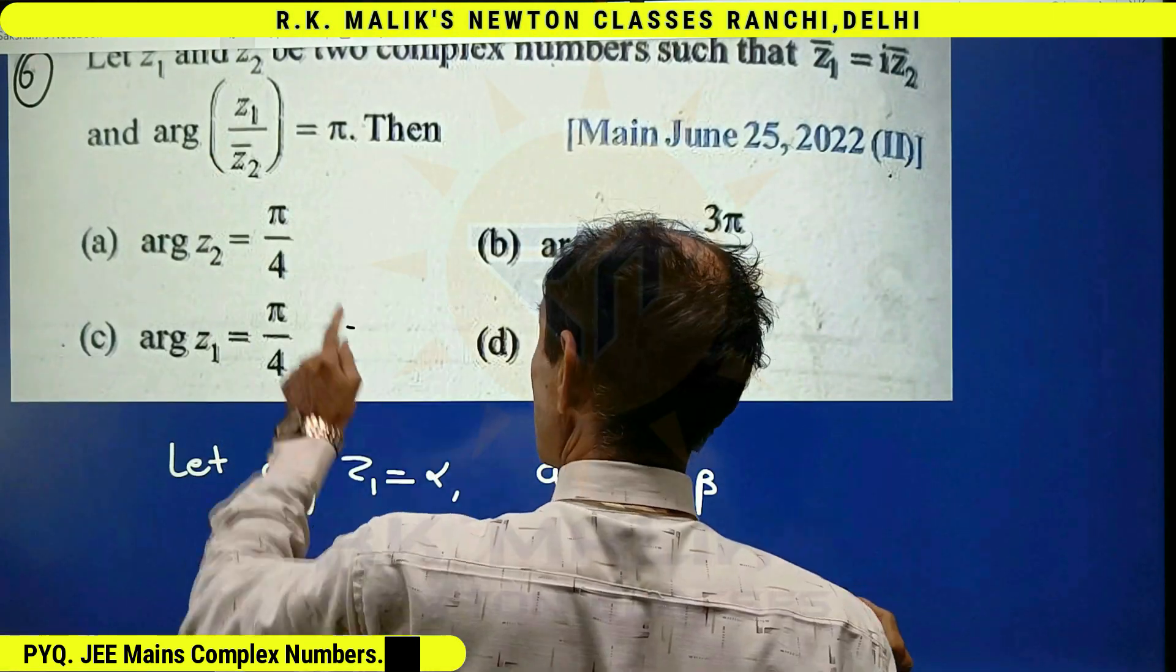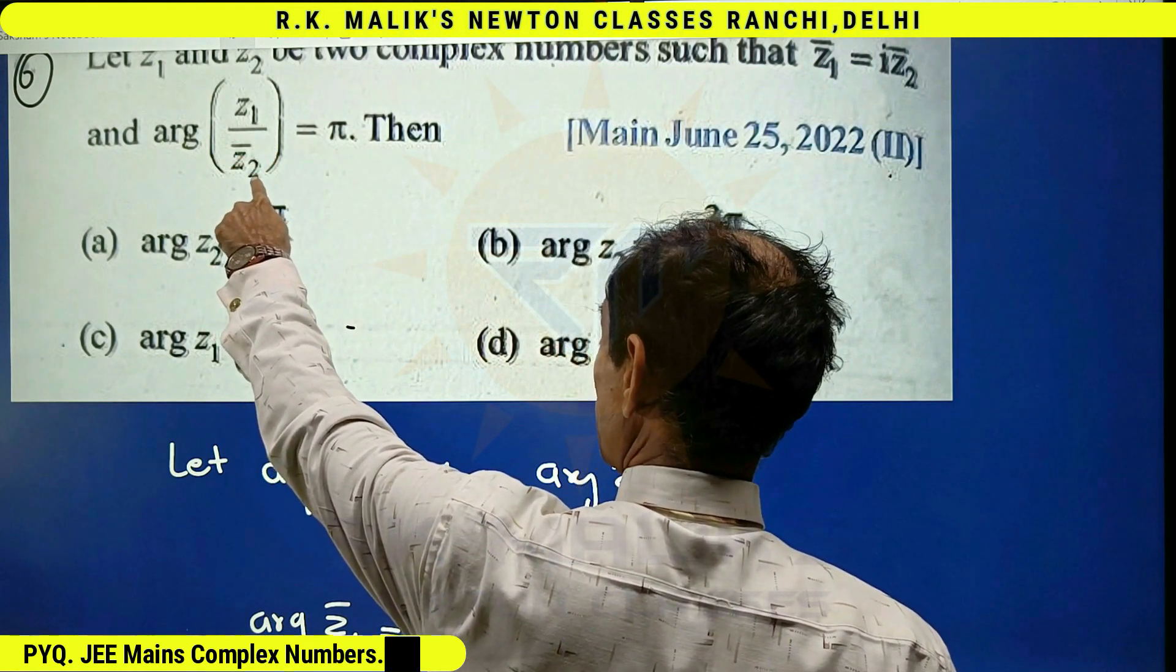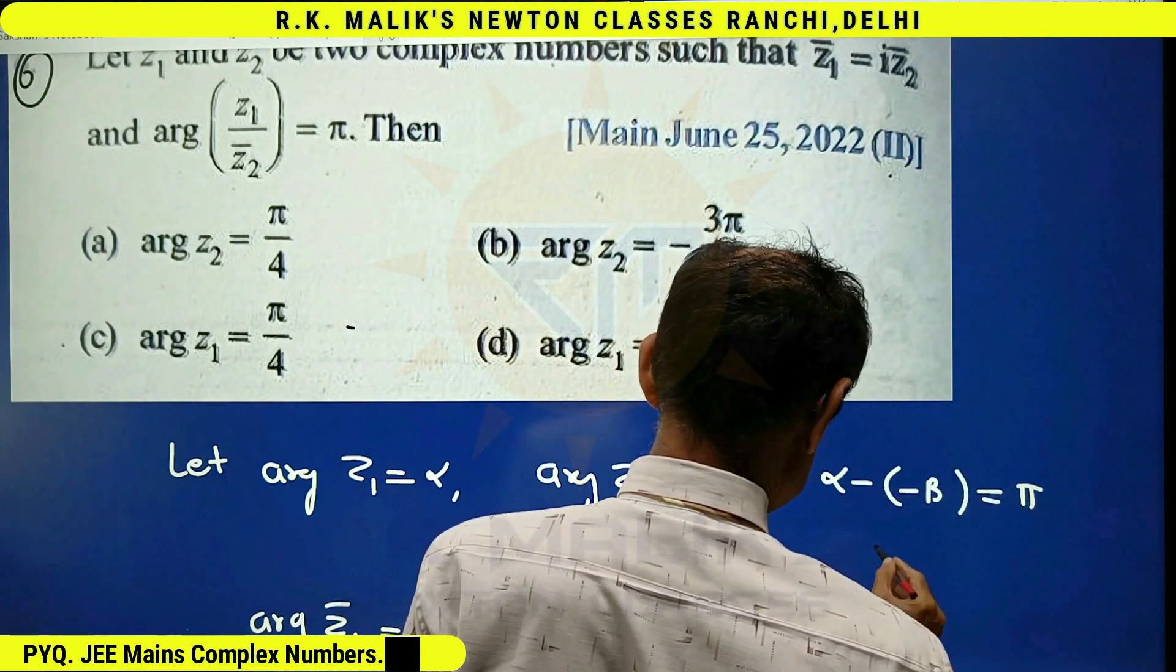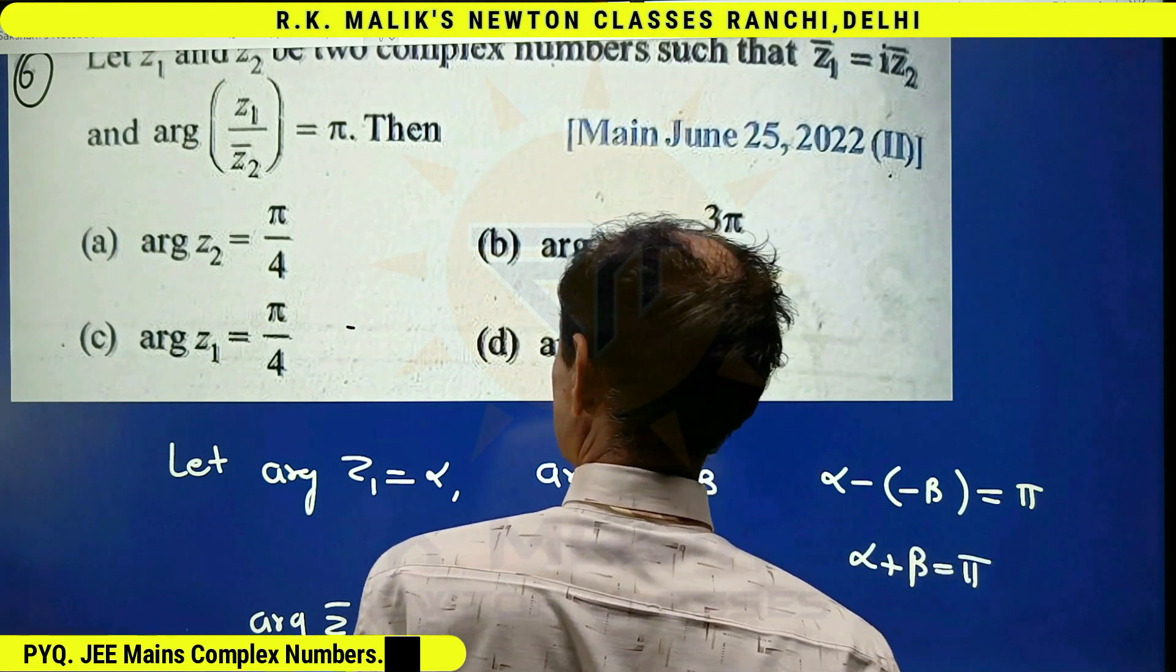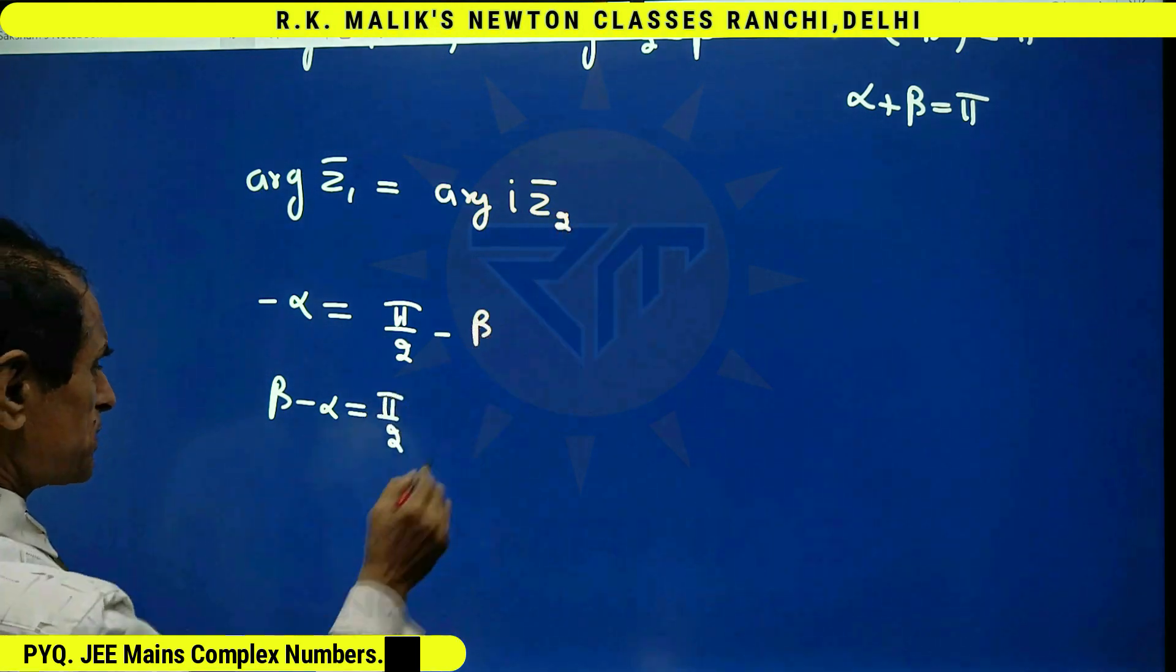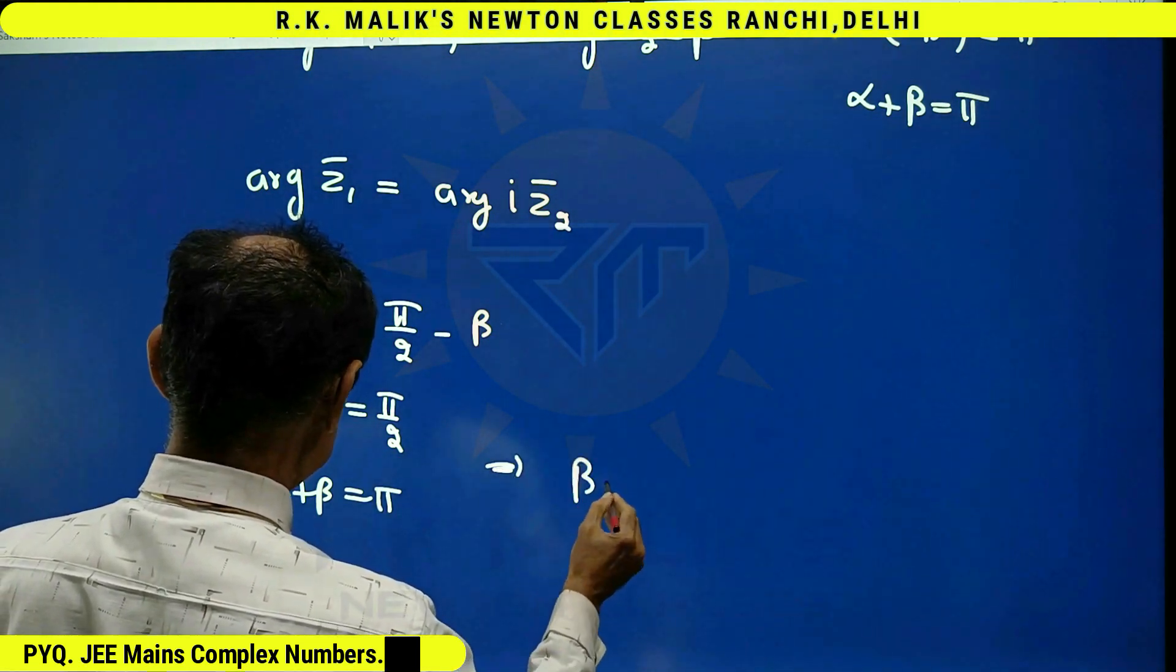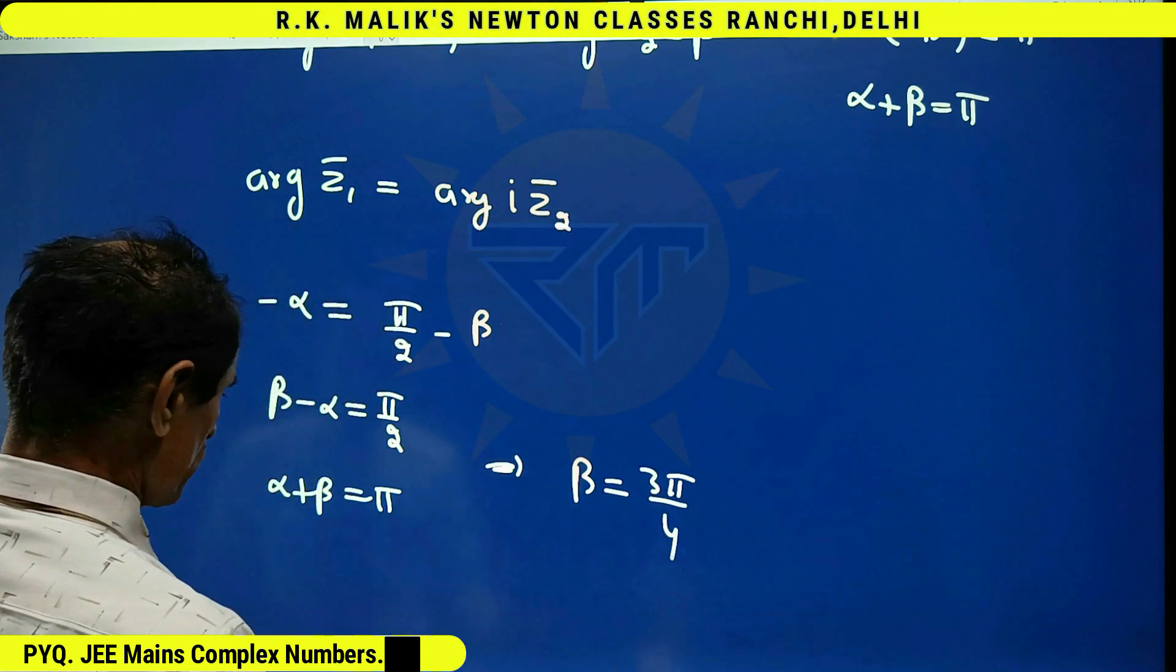And this means argument of z1 upon z2 bar. That is alpha minus minus beta is pi. That is alpha plus beta is pi. And beta minus alpha equal to pi by 2 implies that beta equals pi by 4.